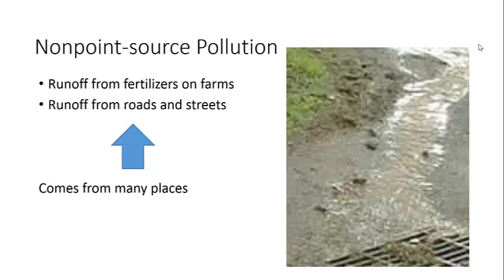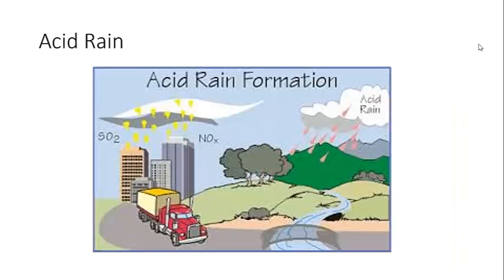Let's practice by taking a look at these. You can see on your paper number one where it says acid rain. I want you to write if acid rain is a form of point source pollution, coming from one place, or non-point source pollution, meaning it comes from many places. If you identified acid rain as non-point source pollution, you are correct. Acid rain comes from many different places — from the exhaust from a truck, from factories putting smoke into the air — and then it comes down from the clouds as acid rain, which is essentially polluted rain. We can't point to just one source, so that is non-point source pollution.